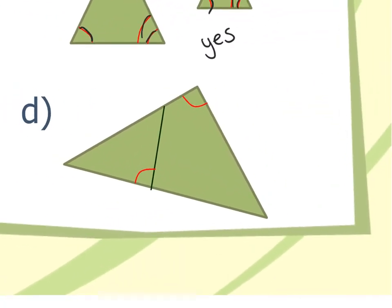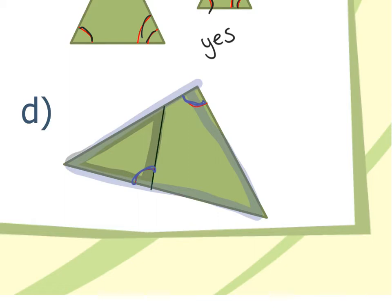Example D has two wonky triangles — one inside the other — each with one angle marked. One angle isn't enough on its own, but the bottom-left angle appears in both triangles, making it reflexive. That gives a second pair of congruent angles, so this is also a yes, angle angle similarity.